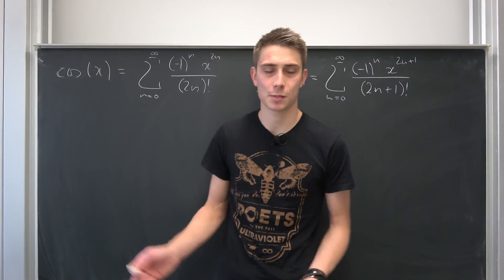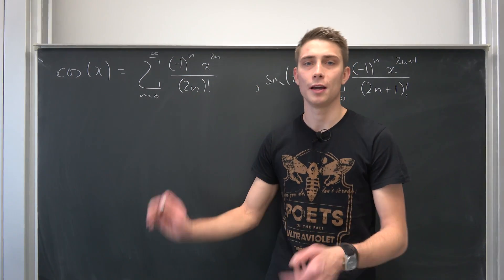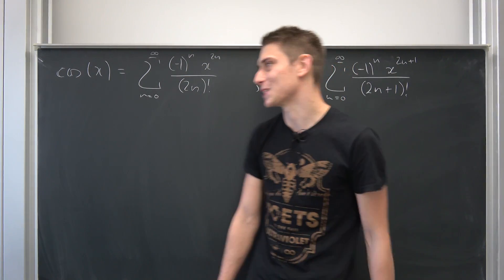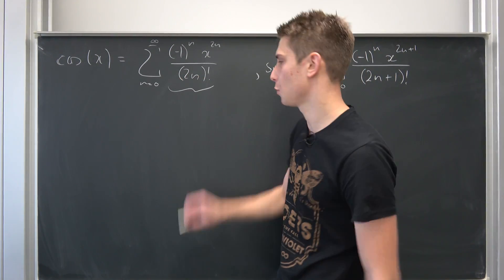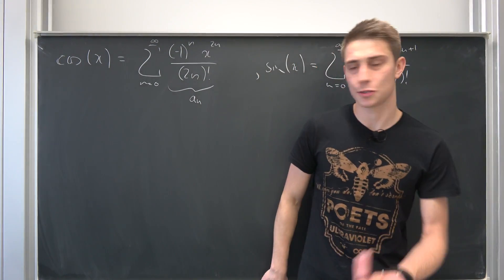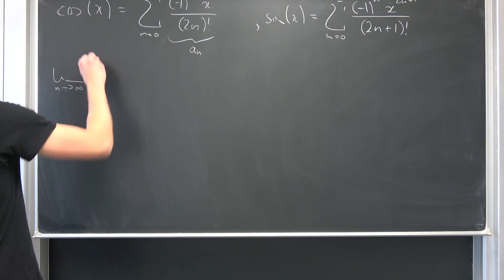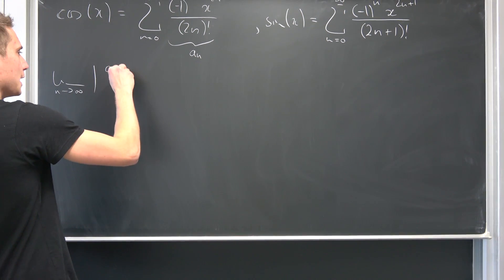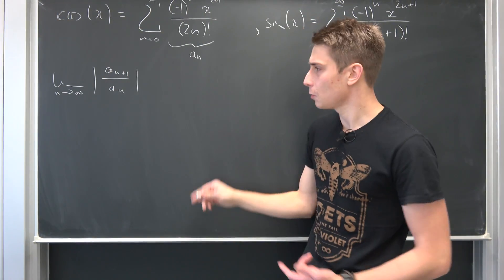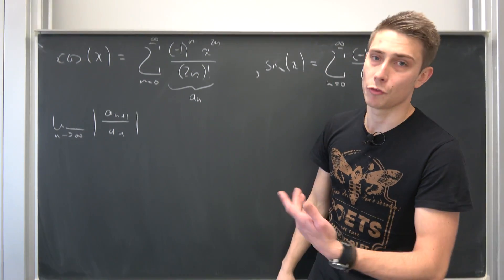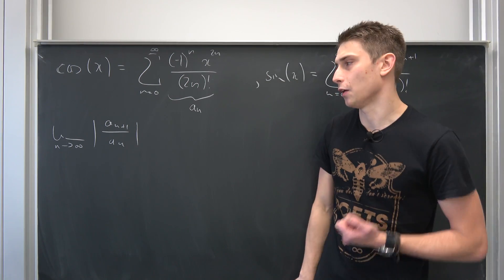Let's go ahead and get started. Just like with the exponential function, we are going to make use of the ratio test you find in your analysis notes. A series is nothing but the infinite summation of sequences. Those are our a_n's, and the ratio test tells us that we have the limit as n approaches infinity of the absolute value of a_{n+1} over a_n, and if this is strictly less than one, the series converges absolutely for all given values of x. We will see what those values of x are.